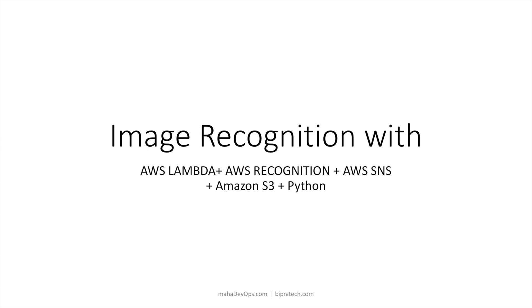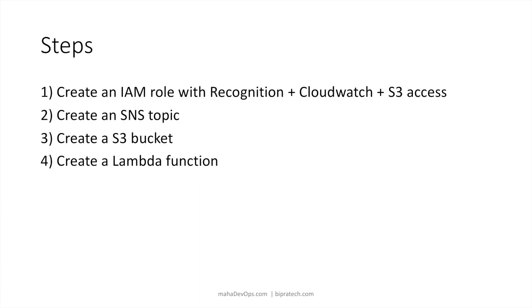In this video I'm going to show you how to perform image recognition using several AWS services: AWS Lambda, AWS Rekognition (which is the API that will tell us whether something is a pizza or a hot dog or whatever), AWS SNS or Simple Notification Service to send us messages, Amazon S3 to store the images, and finally Python for programming.